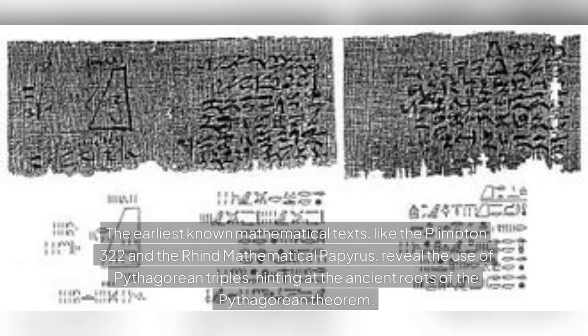The earliest known mathematical texts, like the Plimpton 322 and the Rhind mathematical papyrus, reveal the use of Pythagorean triples, hinting at the ancient roots of the Pythagorean theorem.